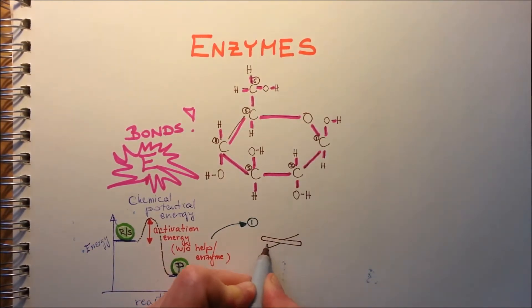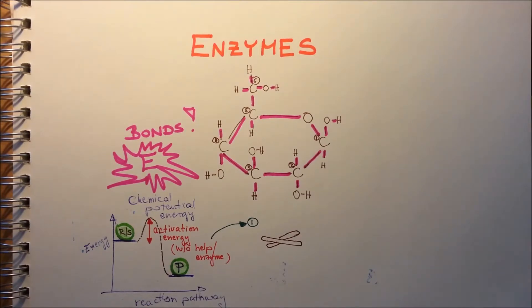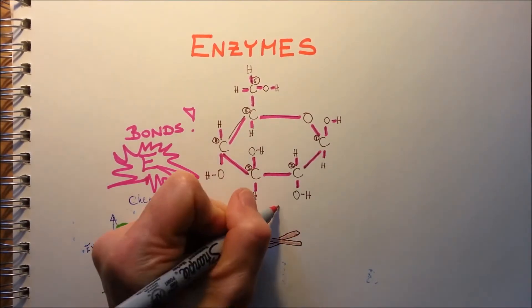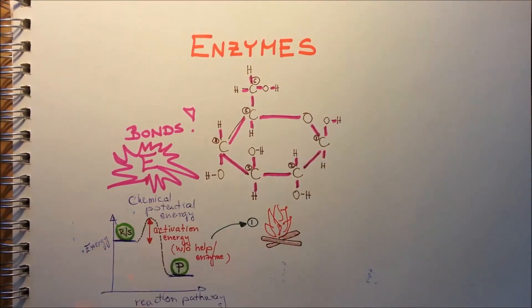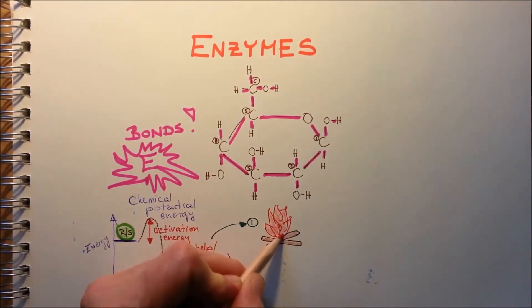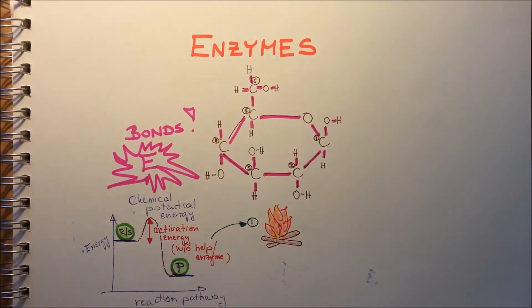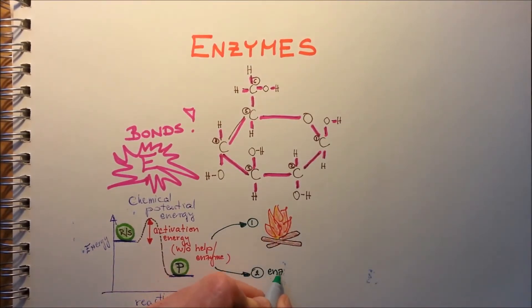One way to speed up the chemical reaction is adding heat, and the heat will loosen up the bonds, break the bonds easier, so it will be pretty good. But the problem is that too much heat will kill the cells. So the other solution is the enzymes.